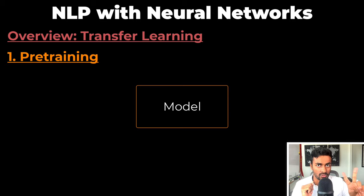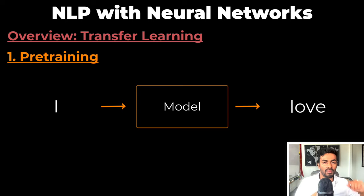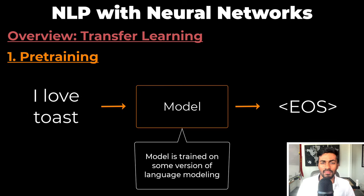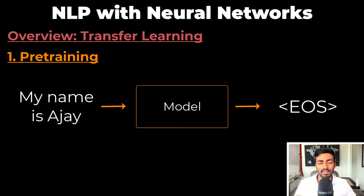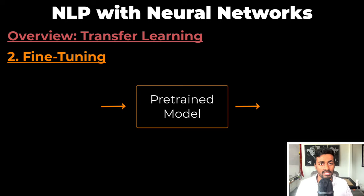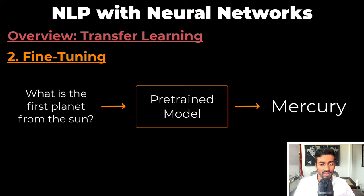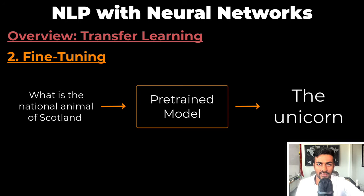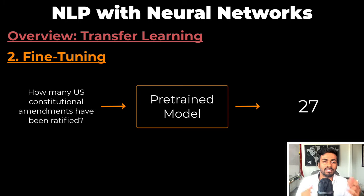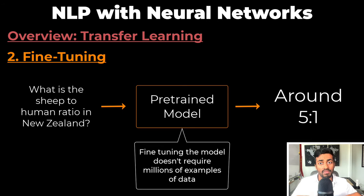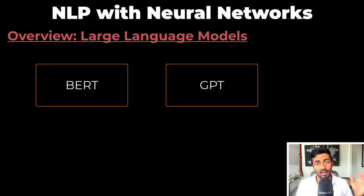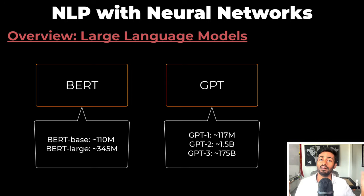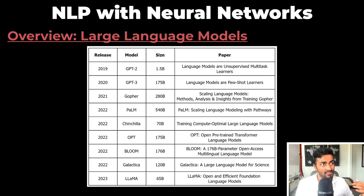In transfer learning, the training phase is broken down into two parts. The first is the pre-training phase, where the model is made to understand language by training on some form of language modeling — essentially predicting the next word or some contextual words given context. The second phase is the fine-tuning phase, where the pre-trained model is further trained on a specific task. Fine-tuning doesn't require millions of examples — we can probably make do with something like a hundred thousand examples or so. BERT and GPT are large language models with hundreds of millions of parameters in their earliest forms, and today we have many LLMs based on these architectures that are only getting bigger.